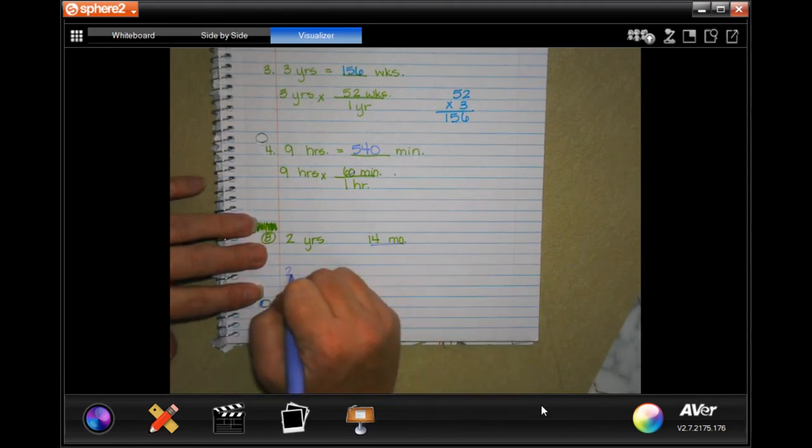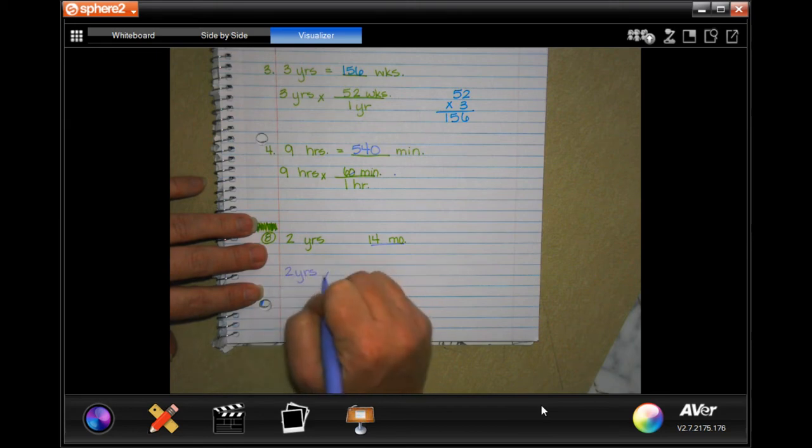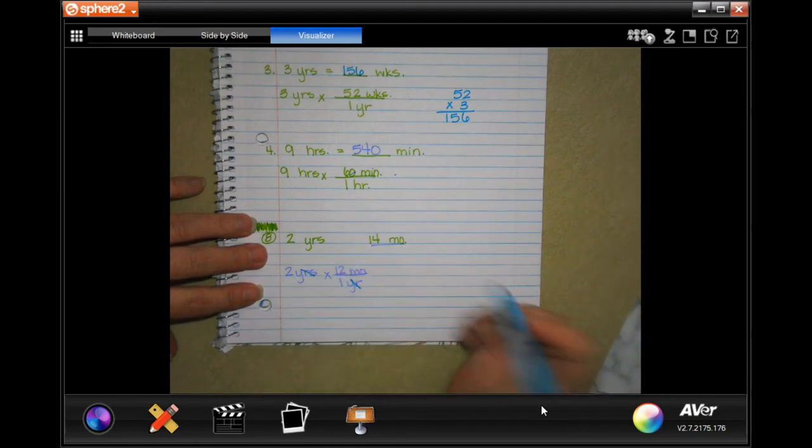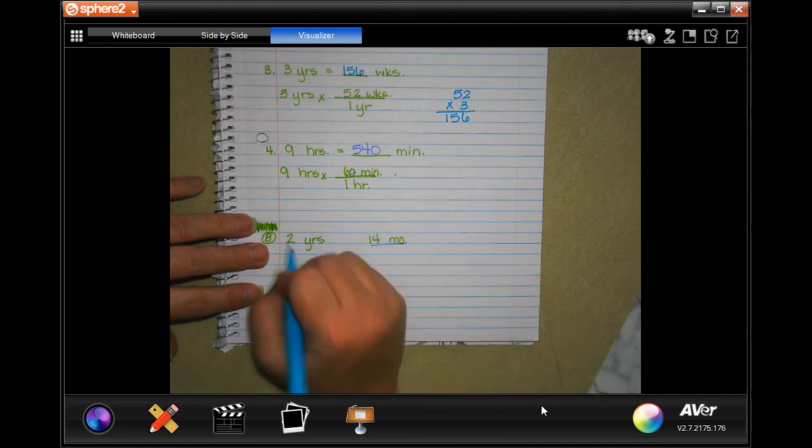So two years, when in one year there's 12 months. We cancel years, we're ending up in months which is what we want, and two times 12 is 24.